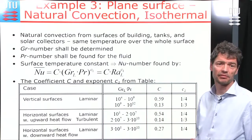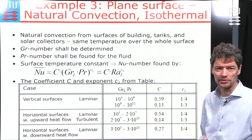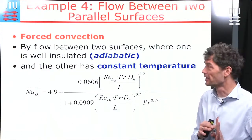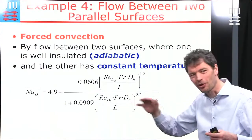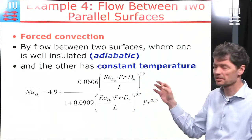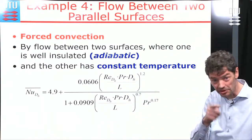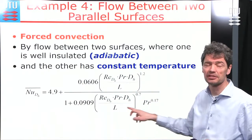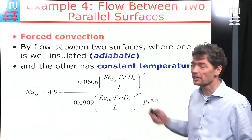Example four is flow between two parallel surfaces, in a somewhat special case where one surface is adiabatic (no heat transmission) and the other has a constant temperature. Authors have found a formula for the Nusselt number in this case. You must identify the characteristic parameters to insert into the formula and calculate the relevant dimensionless numbers.